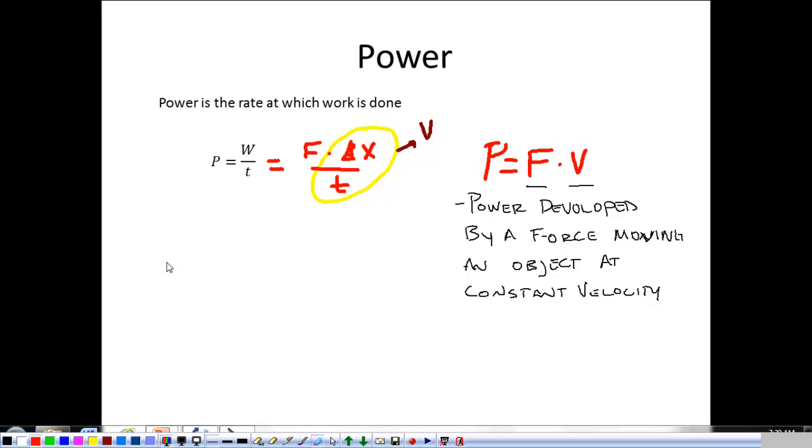The next way we can look at power, if power is work over time, the other thing that we know that work is, is the change in kinetic energy. So power can be the change in kinetic energy over time. Power is kinetic energy final minus kinetic energy initial over time.